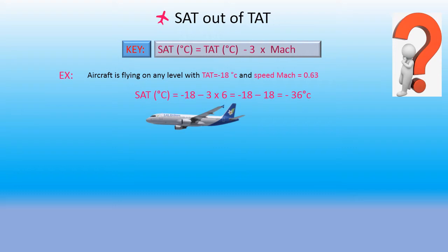Referring to basic mathematics, we calculate the multiplication first. 3 multiplied by 6 equals 18. So minus 18 and minus 18 equals minus 36 degrees Celsius. The answer for static temperature is minus 36 degrees Celsius on that level, depending on the condition shown.